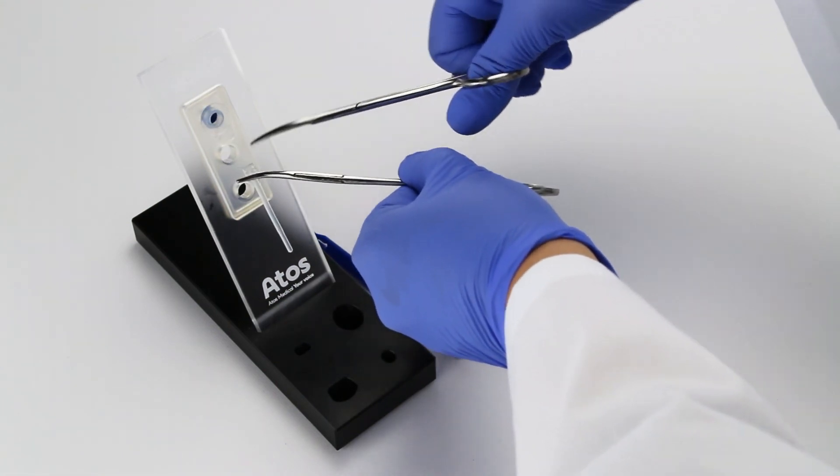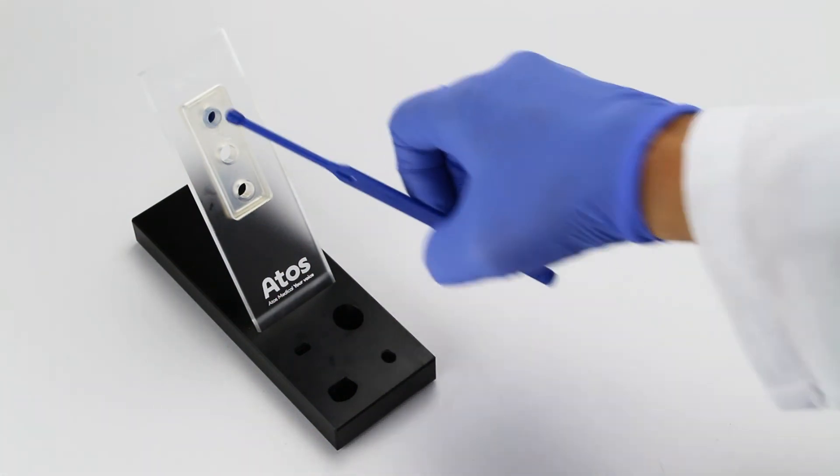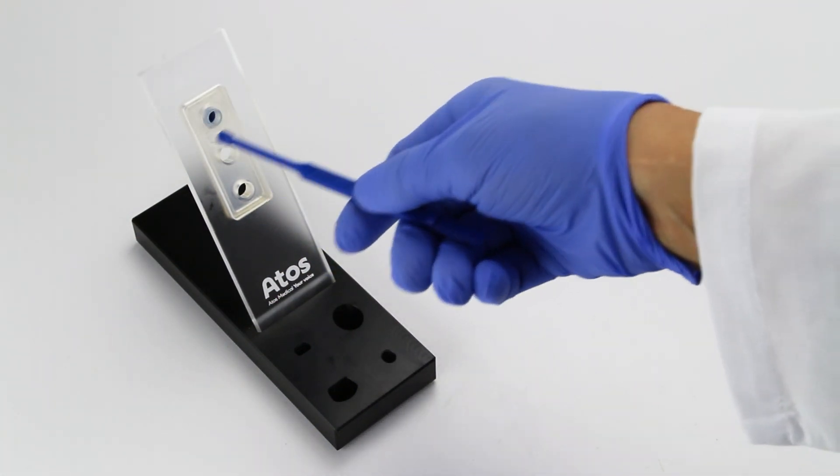If the prosthesis spun during the cutting process, reposition the tab to the 6 o'clock position. Provox Active Valve voice prosthesis is now ready for use.